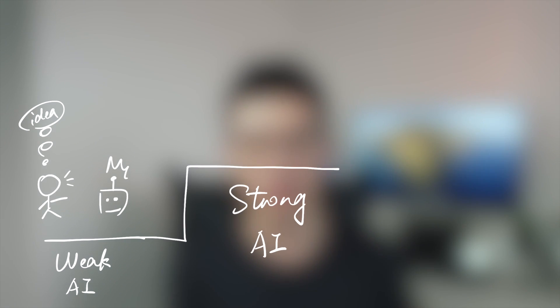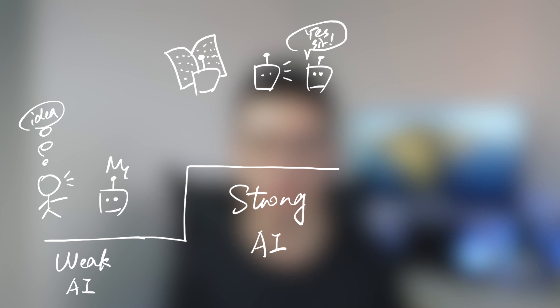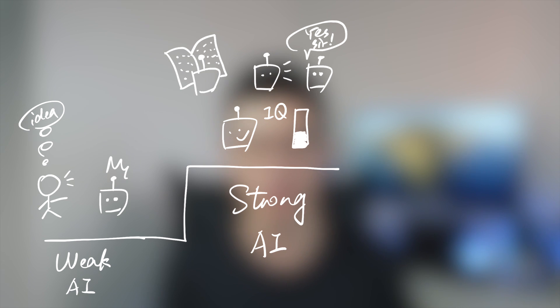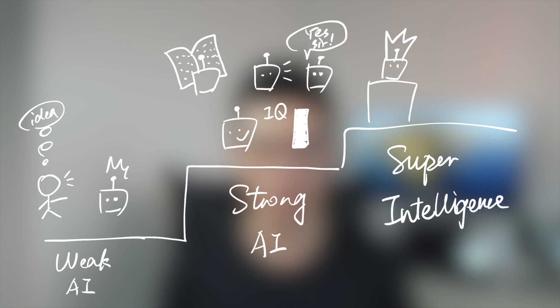The second stage is called strong AI. At this stage, the AI can learn, perceive, understand, and function completely like a human being. If a machine can act like a human, it can train itself and gain self-improvement. Because machine self-training is much faster than human learning, it can easily achieve the next stage, which is called super intelligence. This means the machine will be far smarter than humans, and that would probably mark the extinction of human beings. This sounds horrible, right?